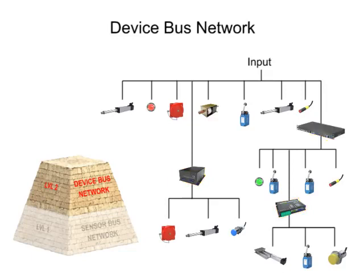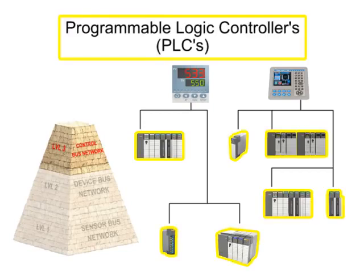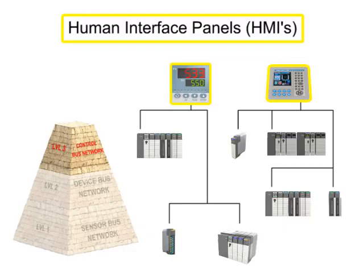Moving up the pyramid, the next increasingly complex level of fieldbus networking is the controlbus network. Controlbus networks are the most advanced networks used on the factory floor and data communication happens at a high level. PLCs or Programmable Logic Controllers are connected to each other alongside HMIs or Human Interface Panels to allow for complete configuration and control of every instrument on the network.